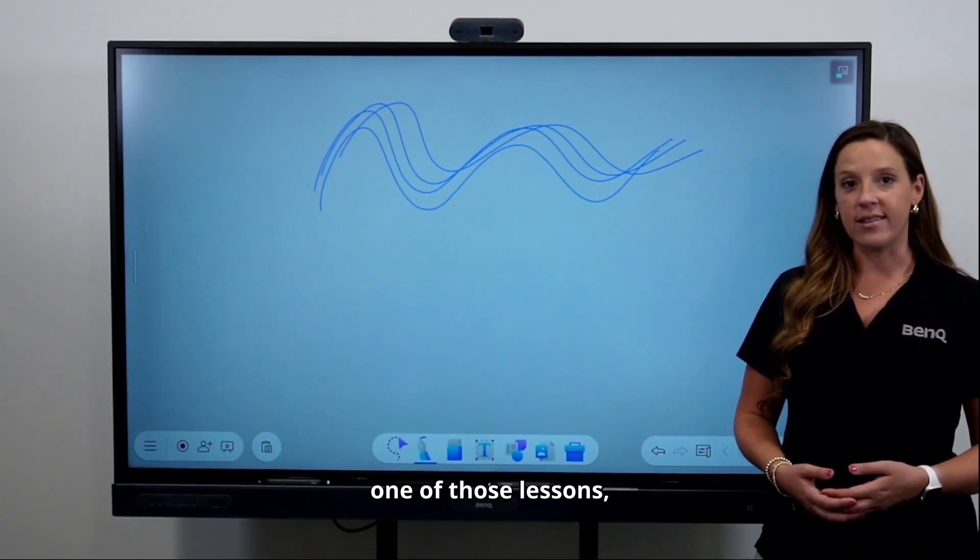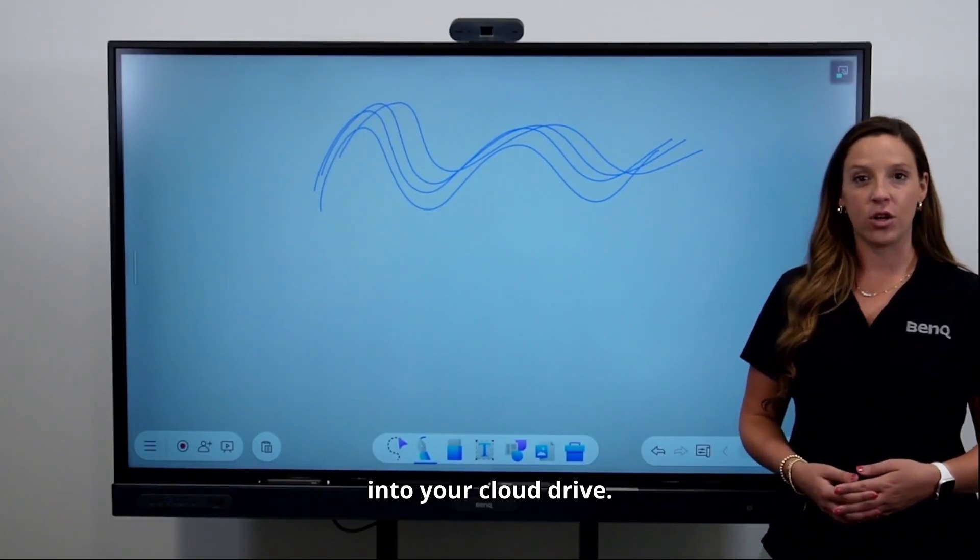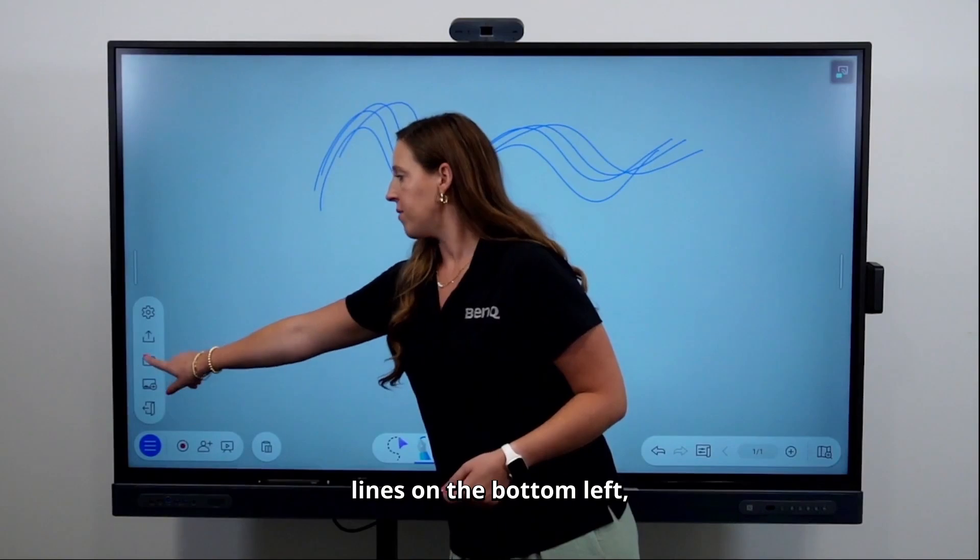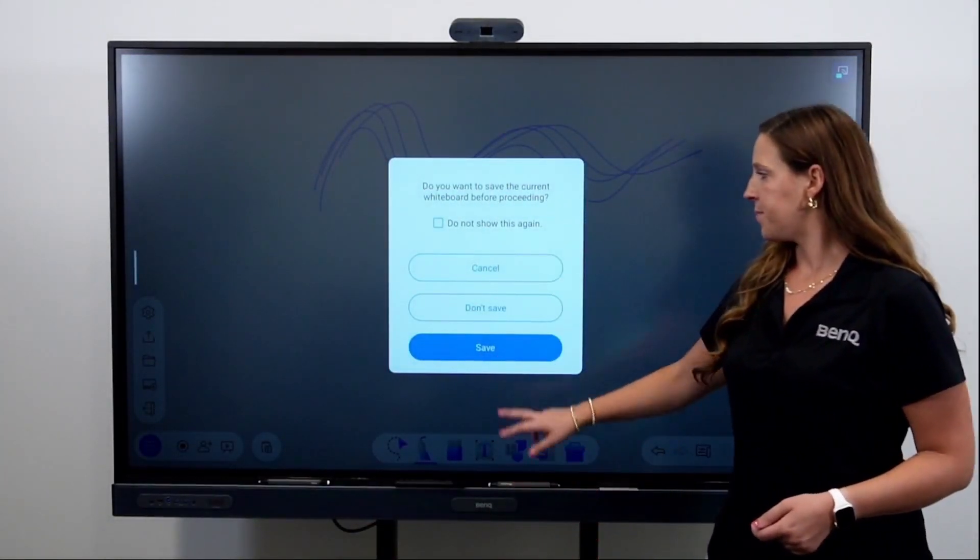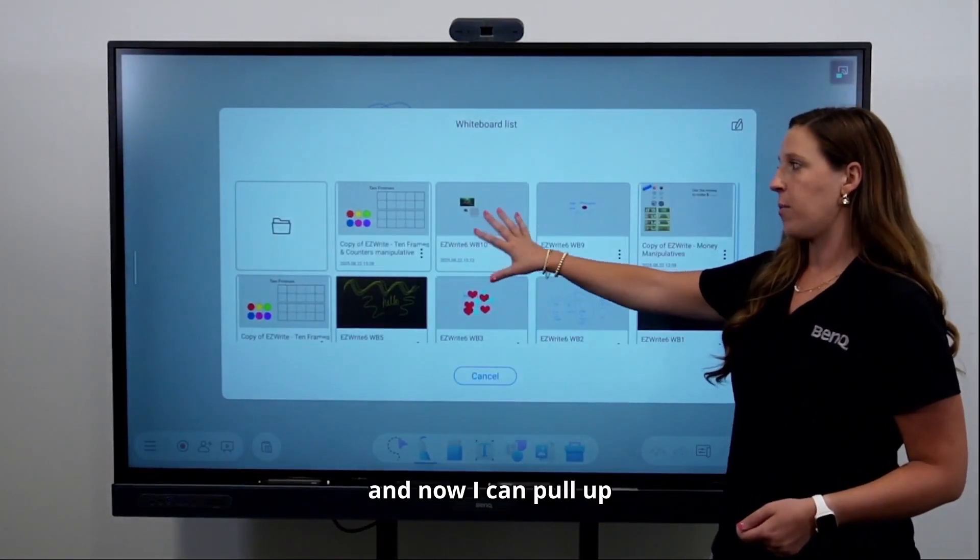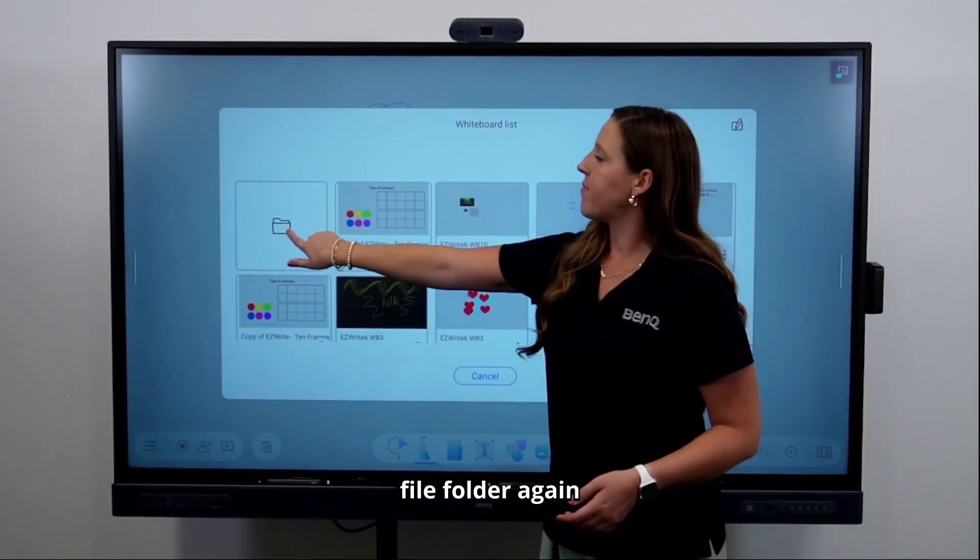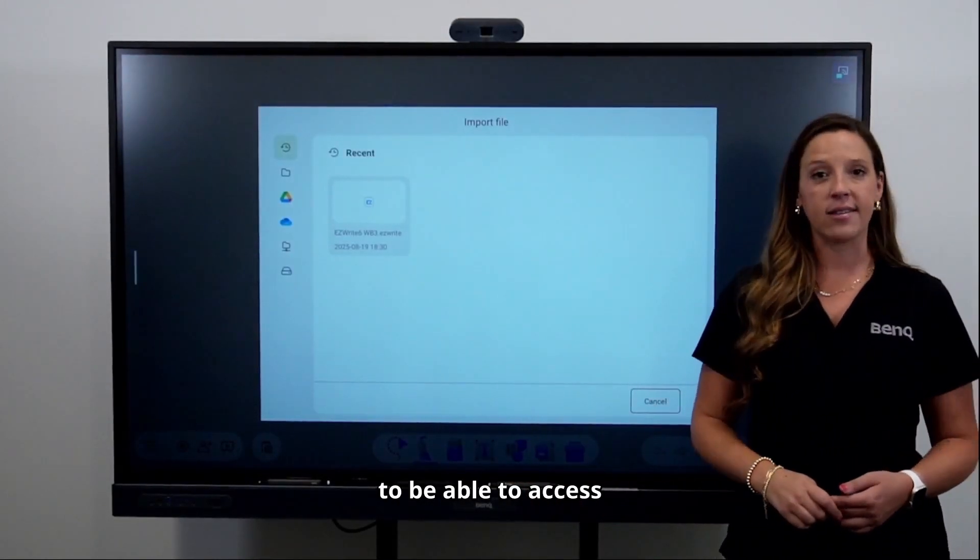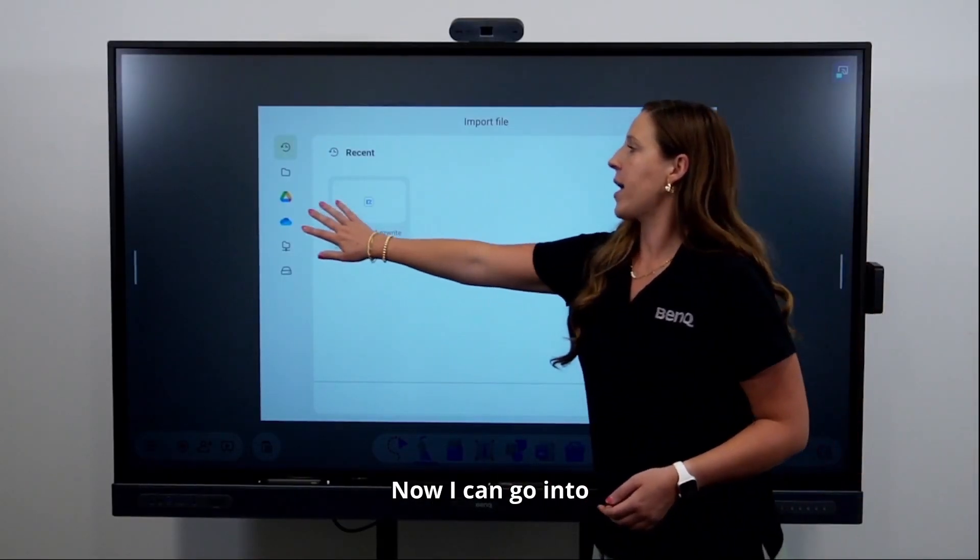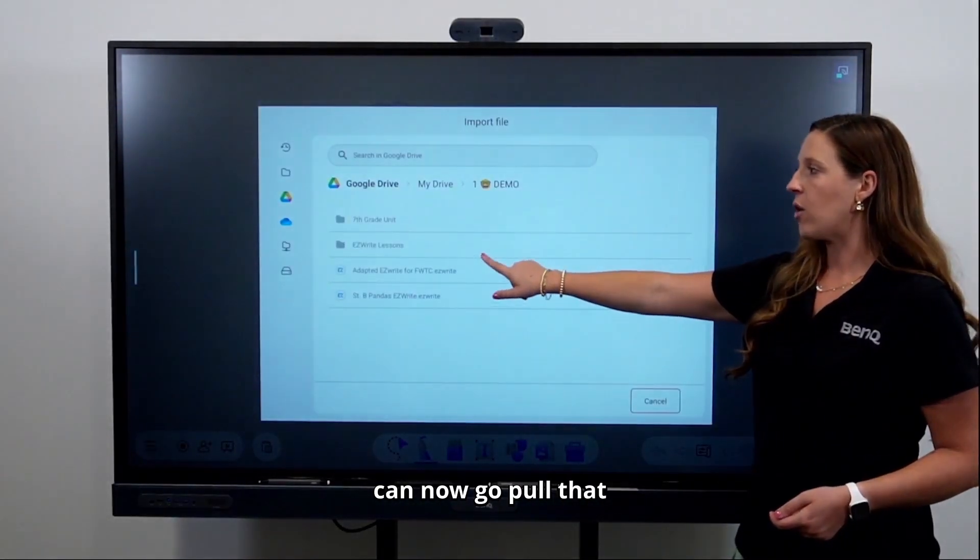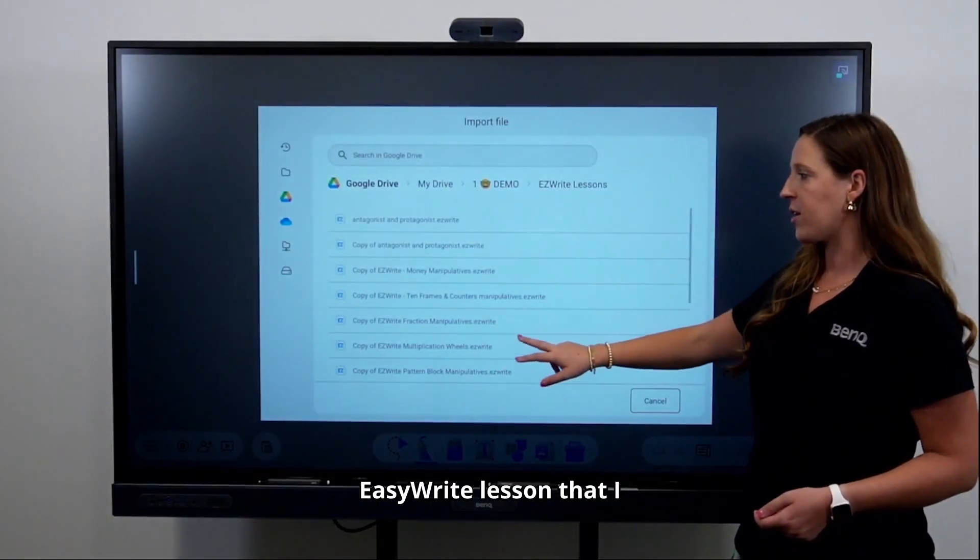Once you've created one of those lessons, it's best if you drop it into your cloud drive. I can tap the three lines on the bottom left, tap the file folder, and now I can pull up all of my recent lessons. But I can tap the file folder again to access my cloud drive. Now I can go into my Google drive and pull that EasyWrite lesson that I created ahead of time.